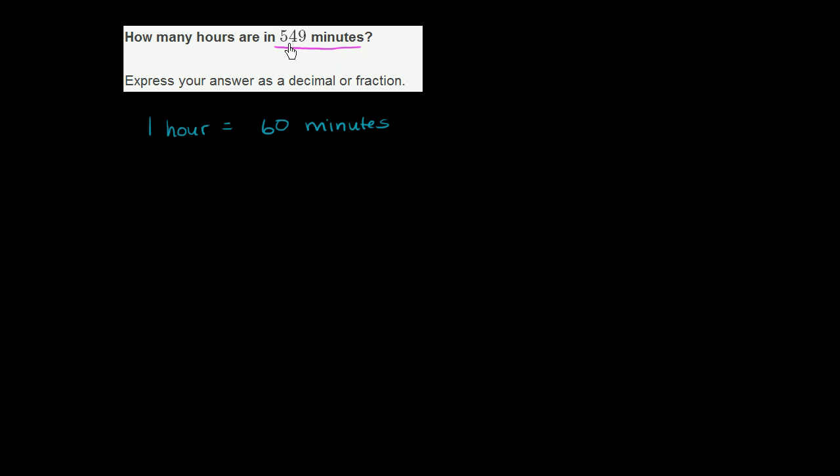Because we know that one hour is equal to 60 minutes. So it's essentially saying, how many groups of 60 minutes can we divide 549 into? Or another way of thinking about that is, what is 549 divided into groups of 60? This is how many hours we're going to have. So let's do that.